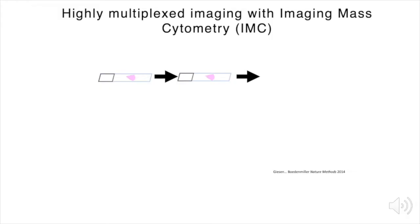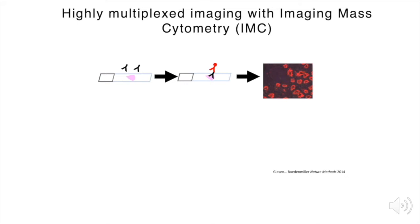To accomplish this, we turned towards a novel multiplexing imaging technology called imaging mass cytometry. In conventional immunostaining, a primary antibody is incubated with a tissue of interest and a secondary antibody conjugated to a fluorophore is used to detect and visualize the primary antibody. Due to spectral overlap between secondary markers and high endogenous fluorescence in the kidney, there is a limit to how many antibodies can be visualized in concert with one another.